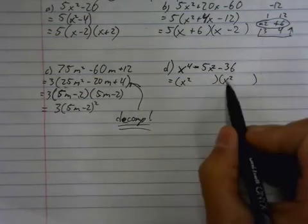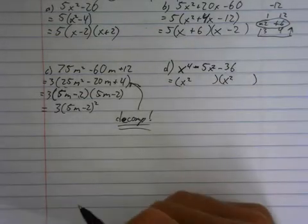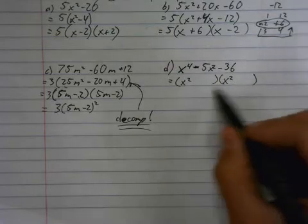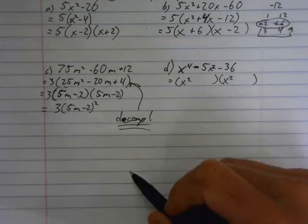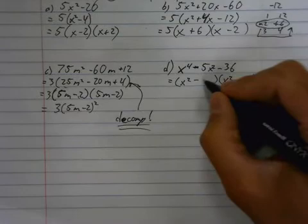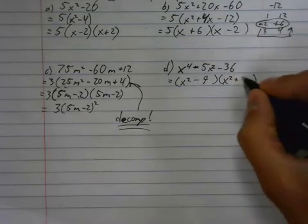So it's just like a simple trinomial, except I need x squared times x squared. Now, what are my other two numbers going to be? Multiply to 36 and add to negative 5. So what do I need? Negative 9 and positive 4.